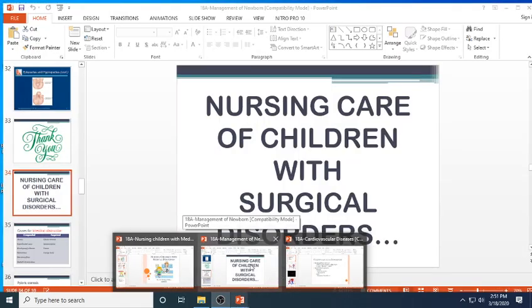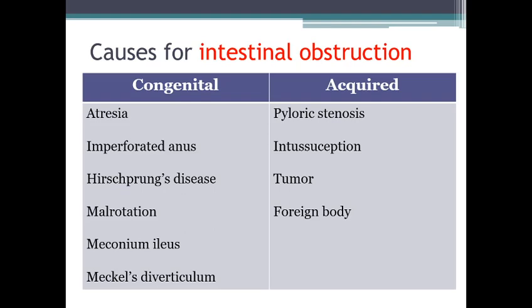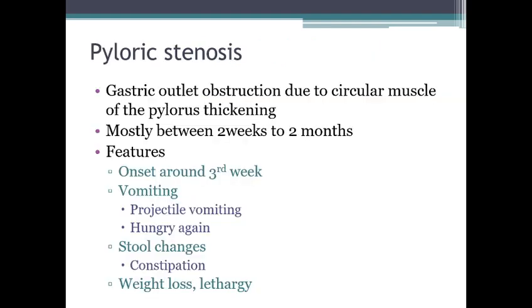We need to discuss nursing care of children with surgical disorders. One of the most common problems requiring surgical intervention is intestinal obstruction, related to the GI tract. In newborns and pediatric cases, intestinal obstructions may be congenital or acquired. Congenital reasons include atresia, imperforate anus, Hirschsprung's disease, malrotation of the intestine, and meconium ileus. Acquired reasons include pyloric stenosis, intussusception, tumors, or foreign bodies.